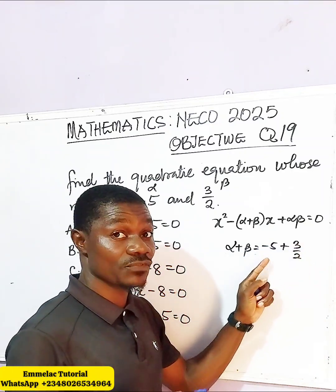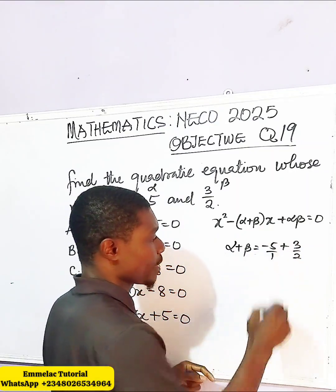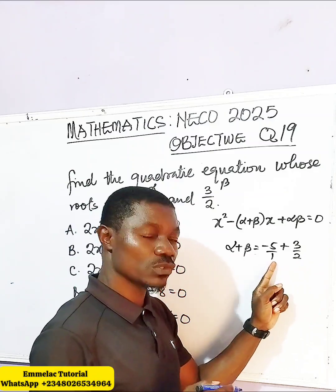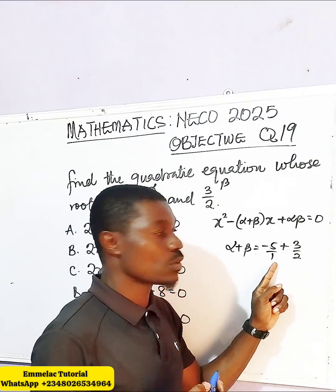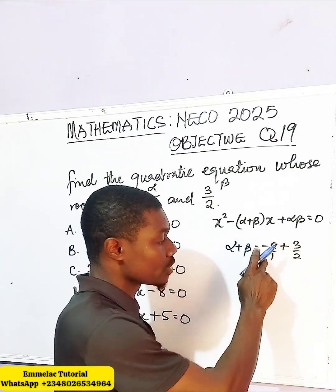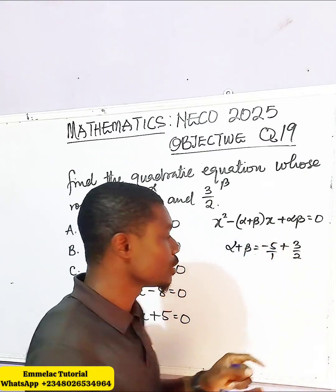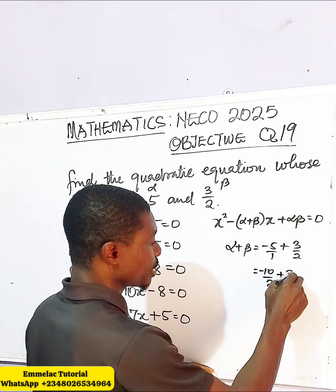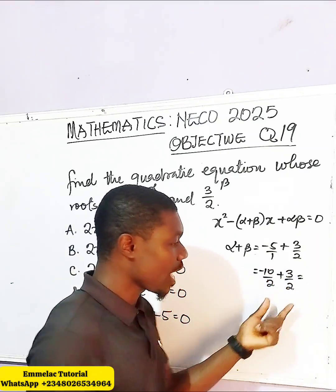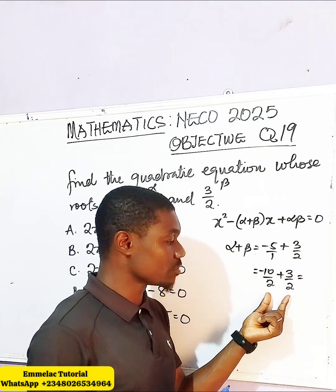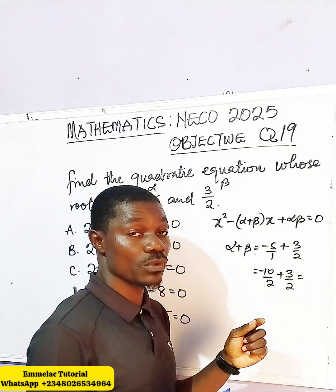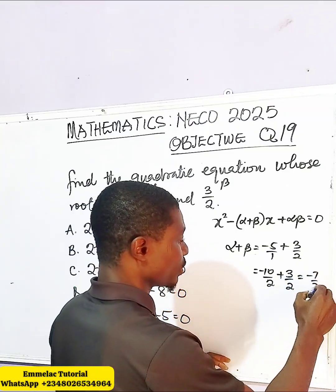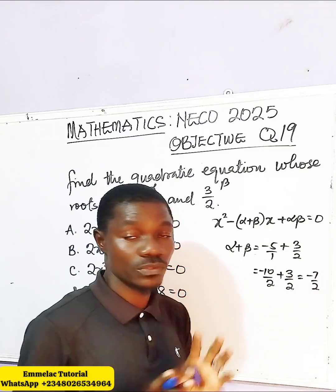This is negative 5 over 1. Since we have a denominator of 2 here, let us also make this a denominator of 2 by multiplying numerator and denominator by 2. We end up having negative 10 over 2 plus 3 over 2. Now we have the same denominator: negative 10 plus 3 gives us negative 7. So we have negative 7 over 2. We've gotten the sum.